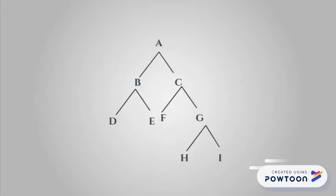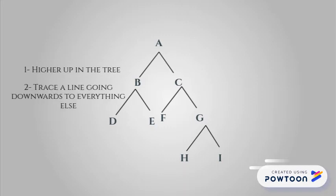We can see that A contains everything else in this tree or dominates everything else in this tree. And that's because 1. A is higher up in the tree. 2. You can trace a line going downwards to everything else.